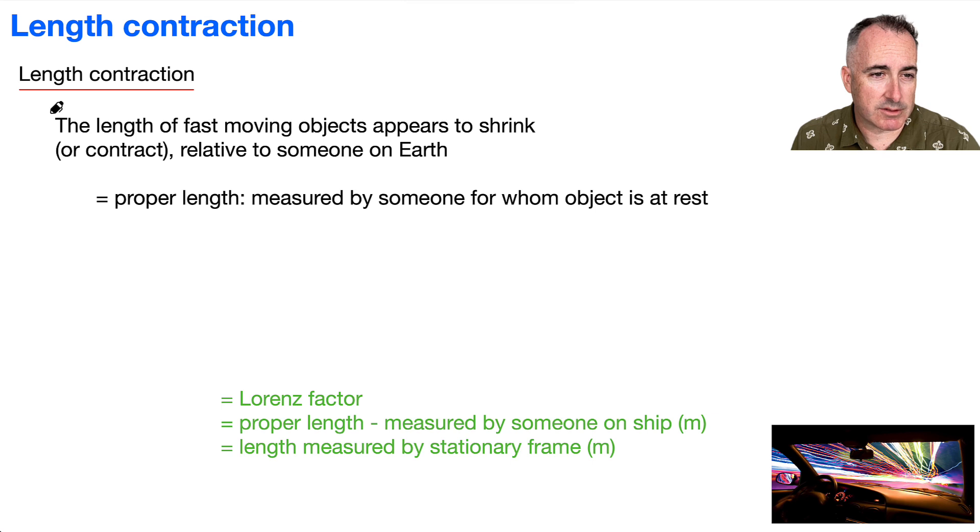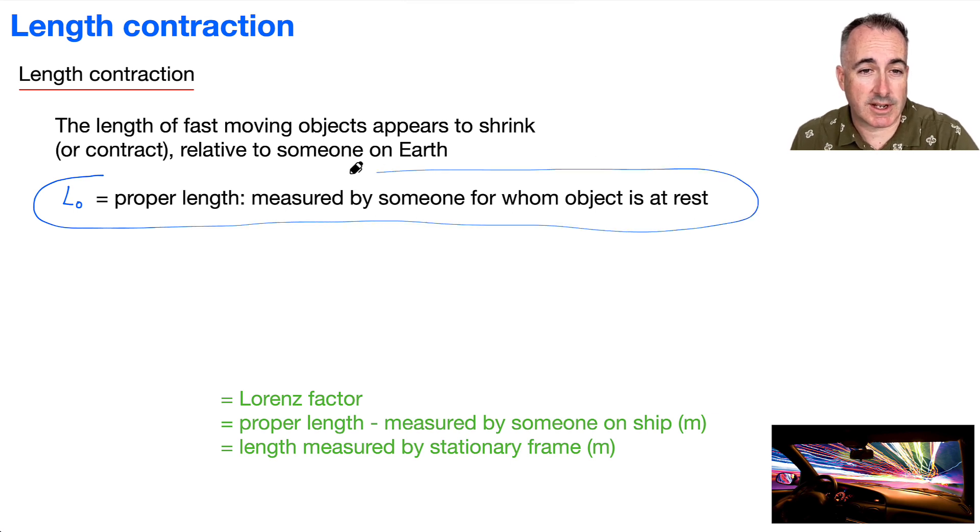So we have to define something called proper length, which we will call L0. This is really important. You need to know this definition. The proper length is the length measured by someone for whom the object is at rest. So if you're sitting in your spaceship and measuring the length of your spaceship, you're measuring the proper length.